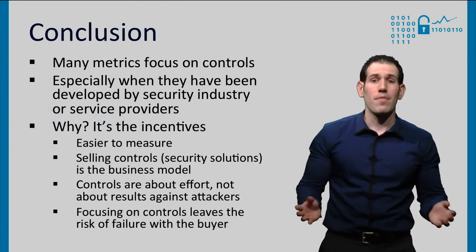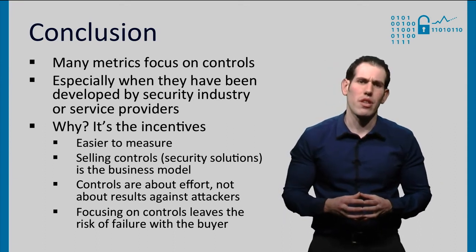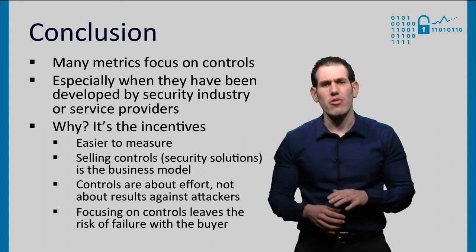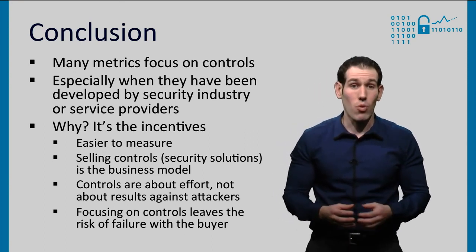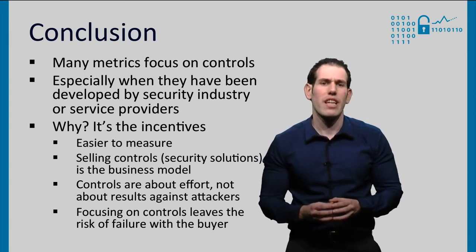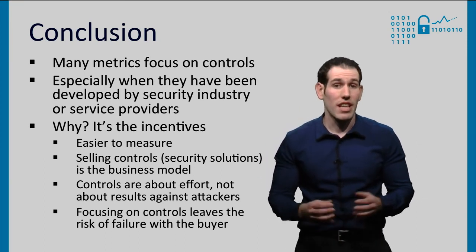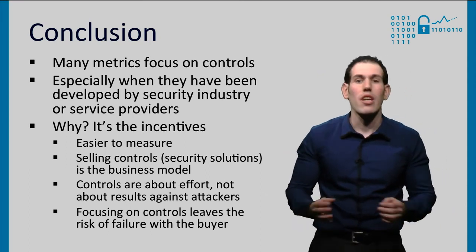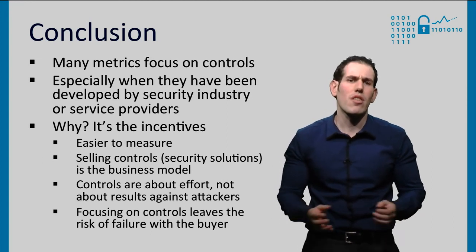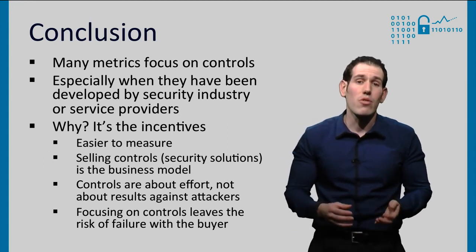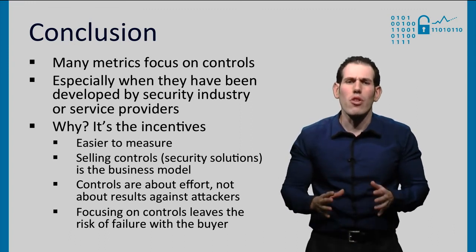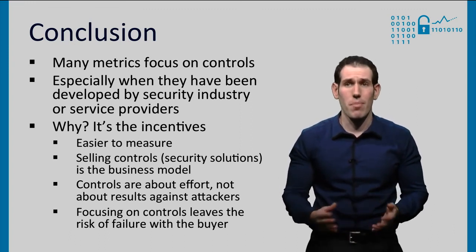To conclude, we have seen that the examples focus mostly on controls, especially when they have been developed by security industry or service providers. Why is that? It's about the incentives. Controls are easier to measure — they are deterministic in nature. Selling controls is their business model, so they don't have proper incentives to take the threat environment into account. Controls are about effort, not about results against attackers, and focusing on controls shifts the risk of failure onto the buyer.